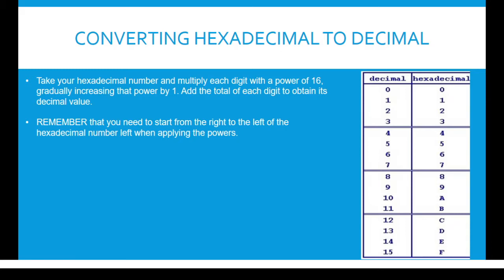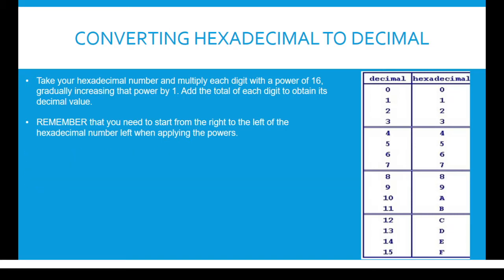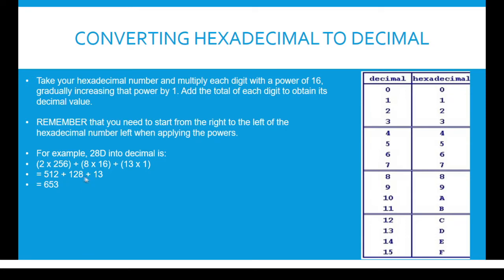Converting hexadecimal to decimal: take your hexadecimal number and multiply each digit with the power of 16, gradually increasing that power by 1. Add the total of each digit to obtain its decimal value. Note that you need to start from the right to the left of the hexadecimal number when applying the powers. Let's take 28D as an example. We start with 16 to the power 0 on the right, which is equal to 1. Then 16 to the power 1 is equal to 16, and 16 to the power 2 is equal to 256. We multiply each hexadecimal value with the powers and then add the values together to get 653.